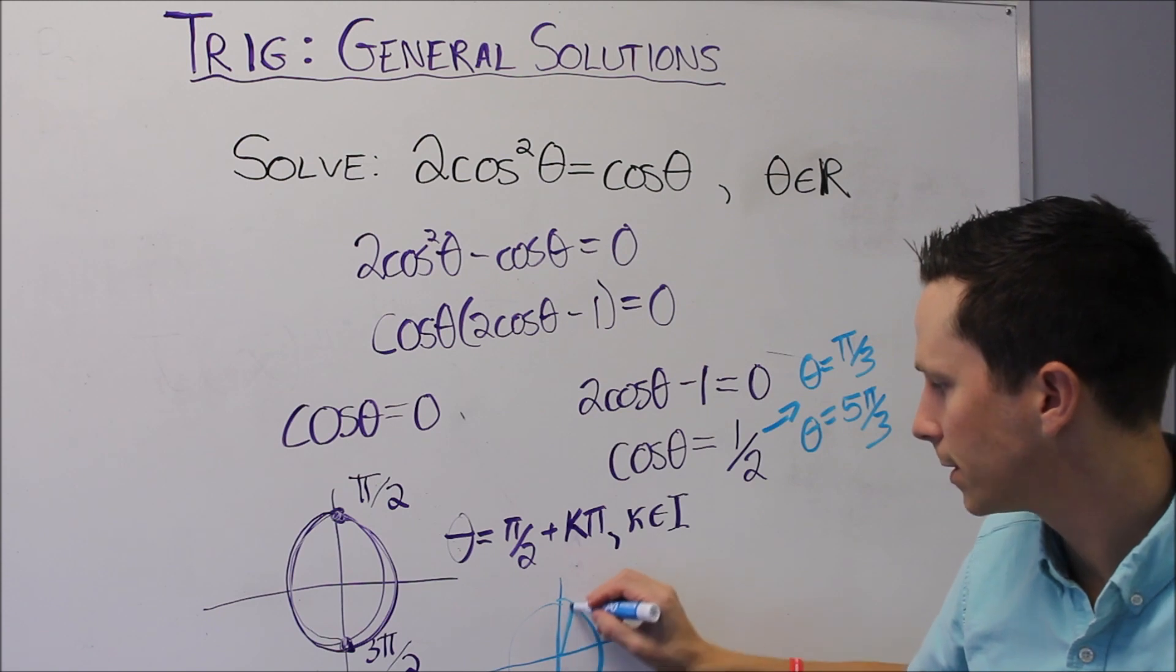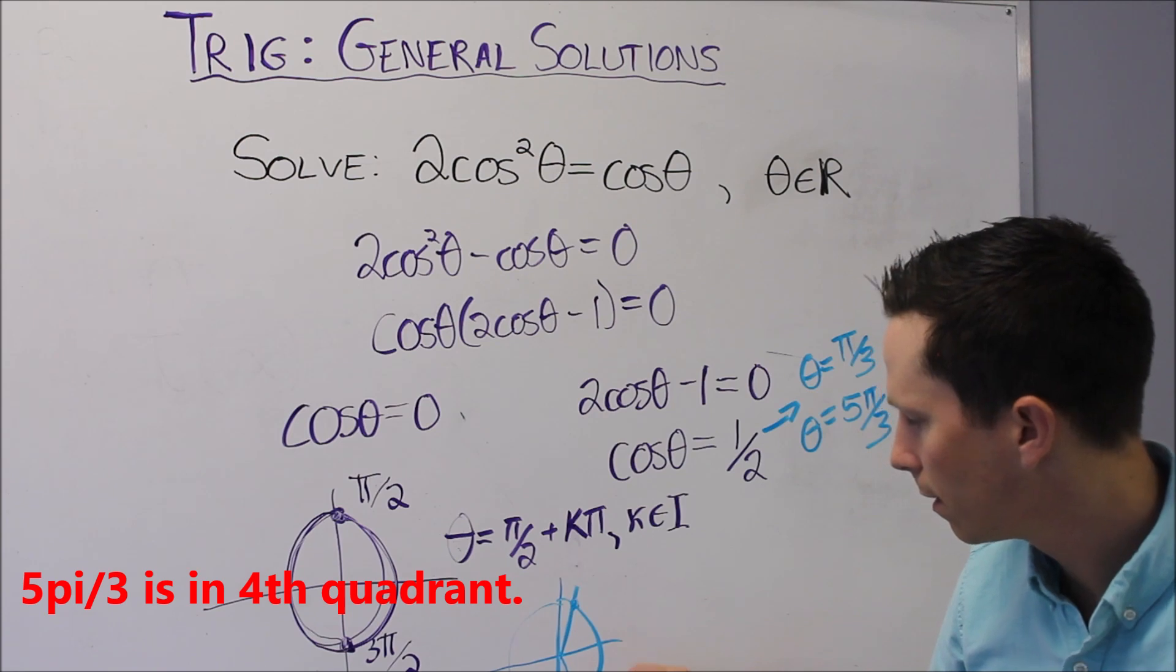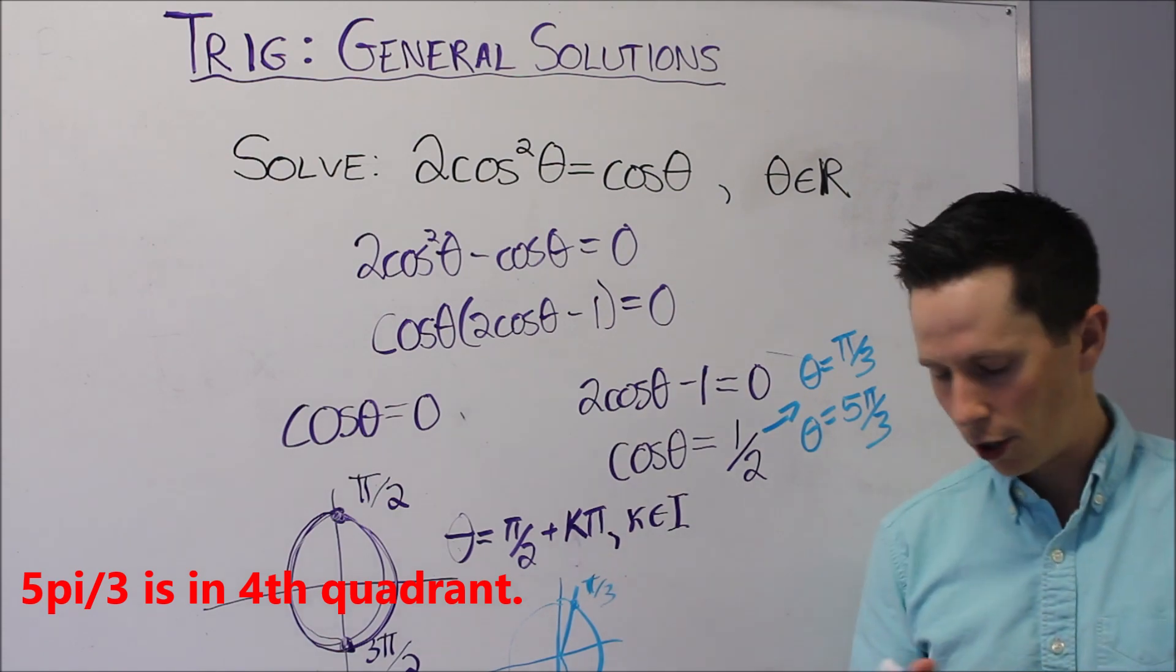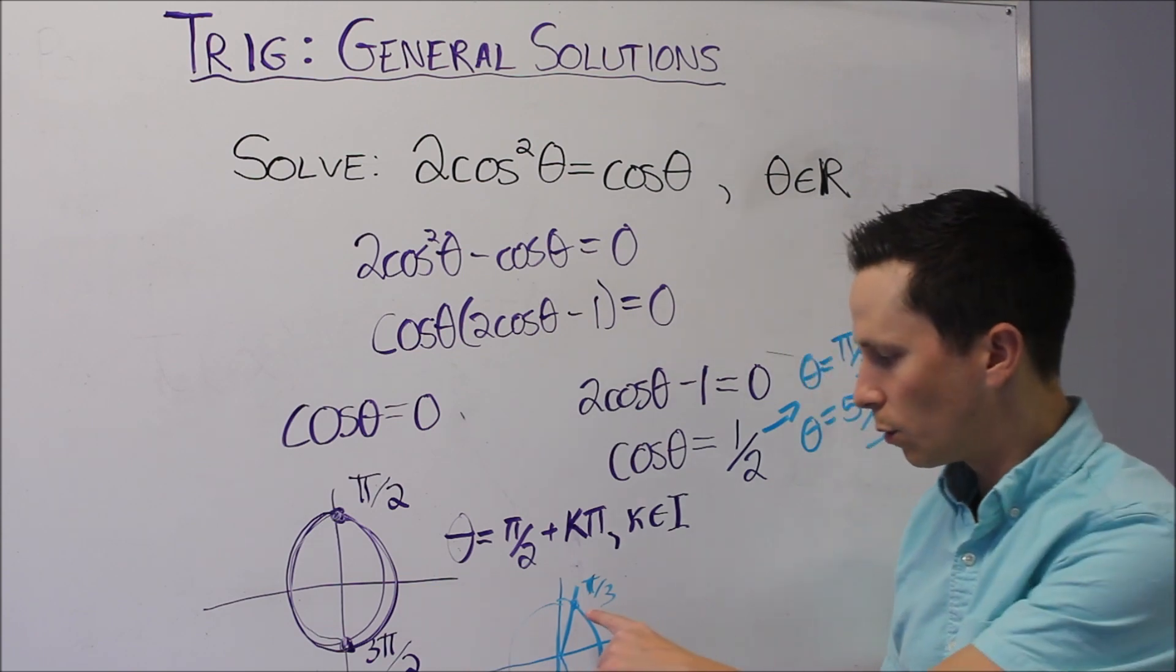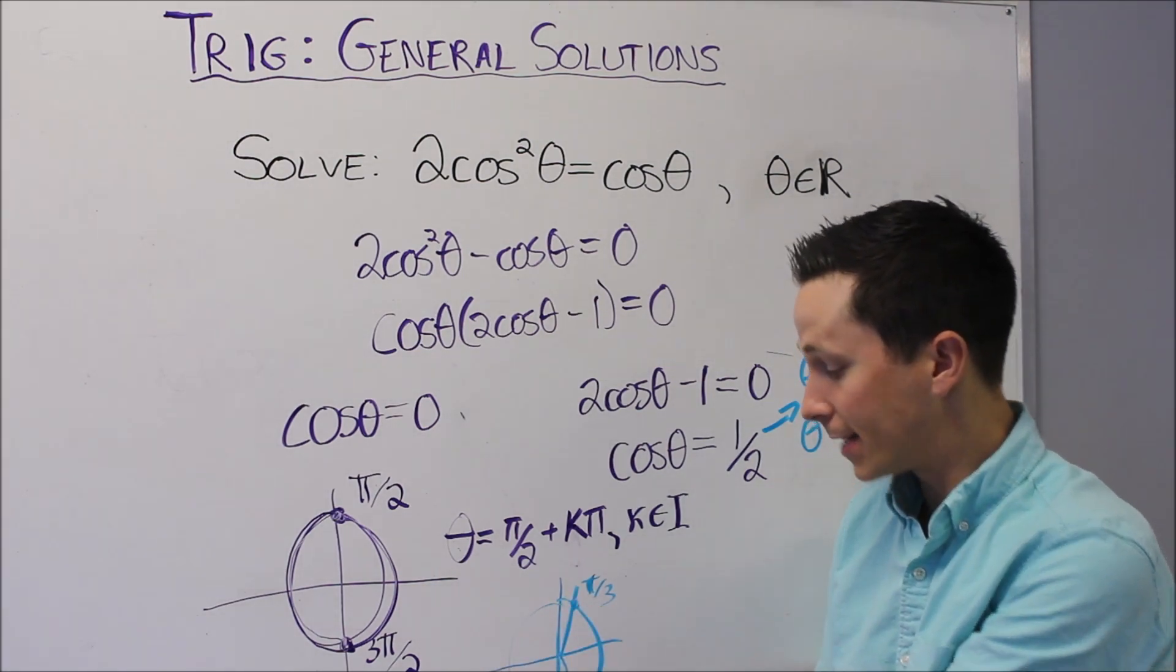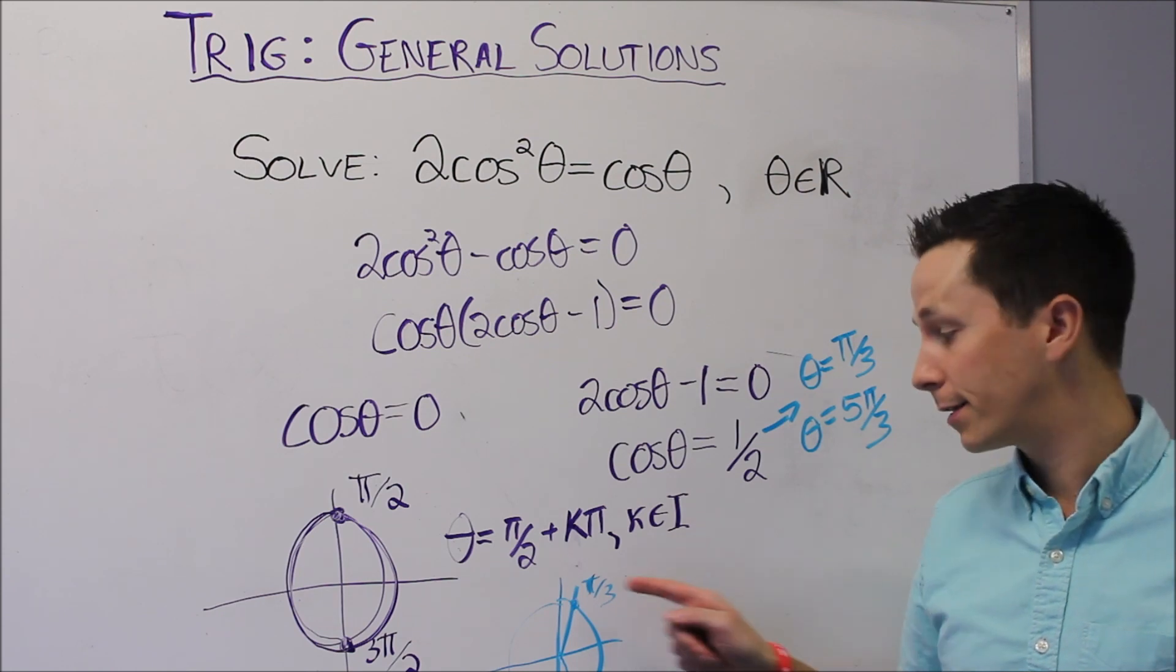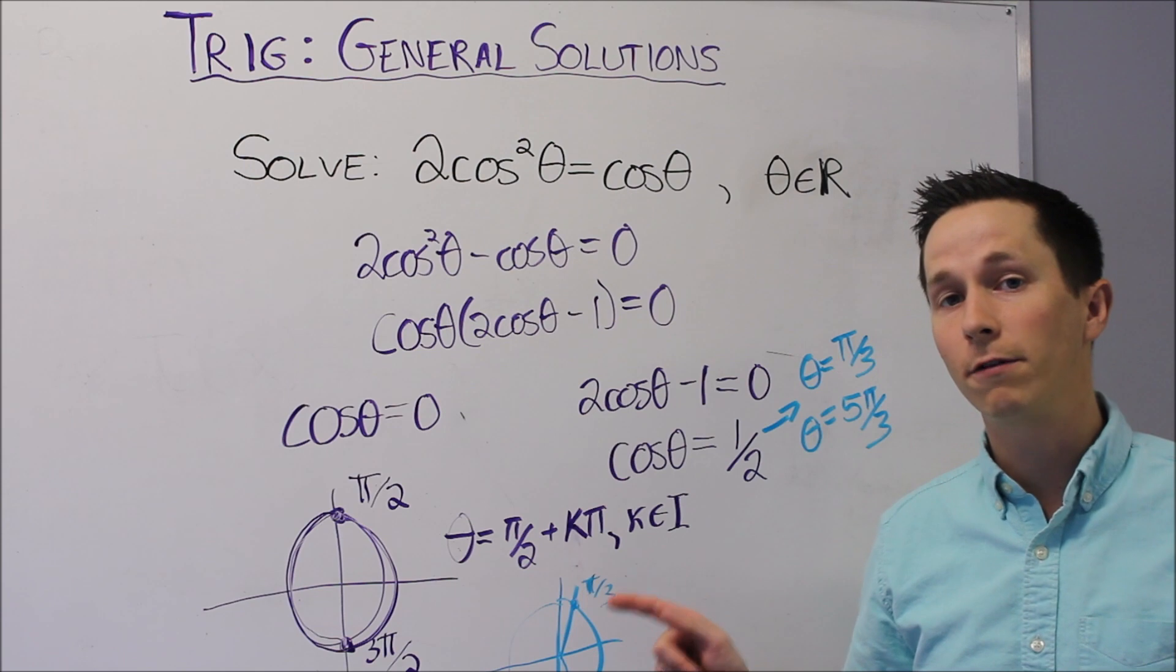If we take a look at a diagram, again, that happens here at π over 3 or here at 5π over 3. Note that they're not equidistant apart like they were here. So we can't say add a certain amount to π over 3 and then add that same amount to 5π over 3 because we won't get back here. Because they're not equidistant apart.